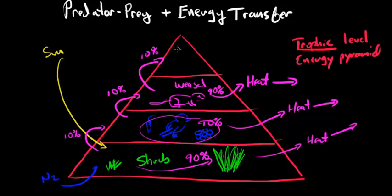At the very top we have our owl sitting on a branch with his owl eyes looking down at the weasel, getting ready to eat him. The owl got 10% of the energy, of 10% of the energy, of 10% of the energy, and then it eventually uses up that energy and it's lost in the form of heat back into the atmosphere.